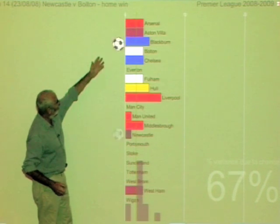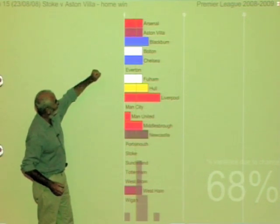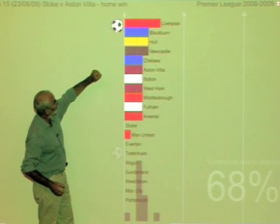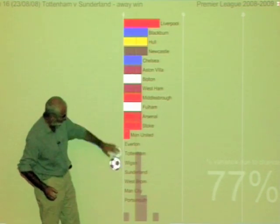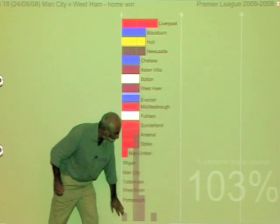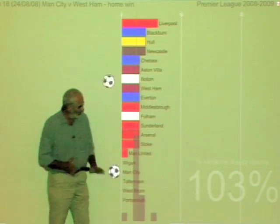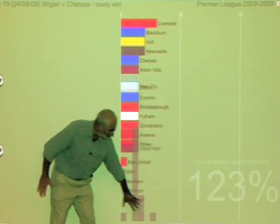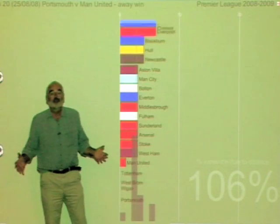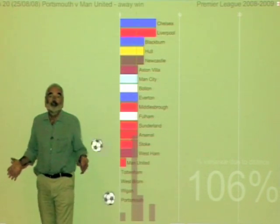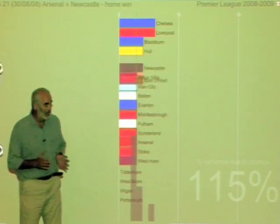If we sort those we can now see who's in the lead — Liverpool is in the lead at that point, up here, and some teams have yet to score at all. The key question is: is this spread of points due to chance, or does it show real differences between the teams?